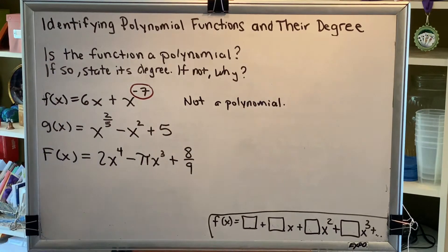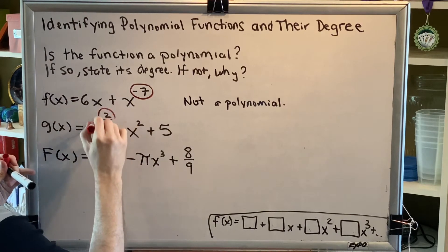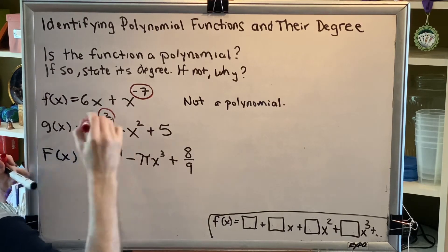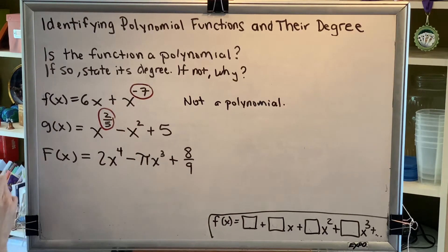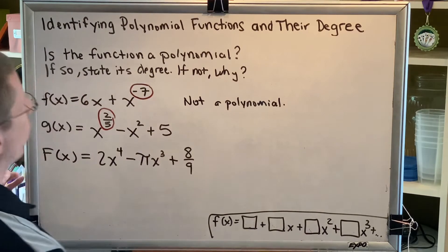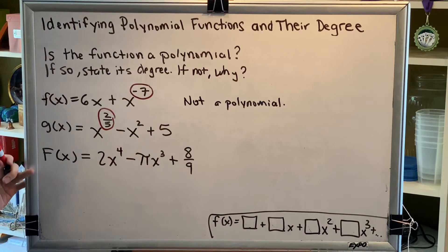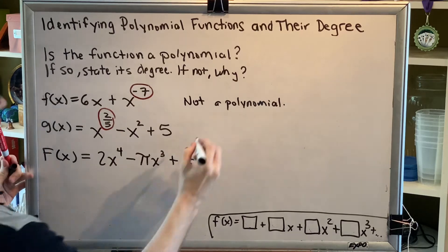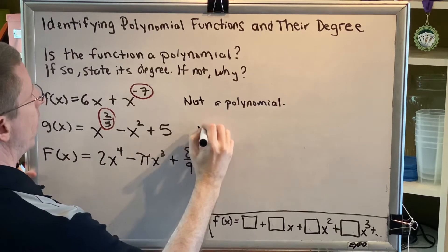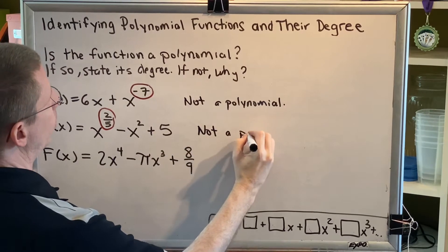g of x is also not a polynomial, and the reason why is because of the exponent of x here. Remember, the exponent of x has to be a counting number: 1, 2, 3, 4, 5, etc. It cannot be a fraction like 2 fifths. Therefore, this is not a polynomial.